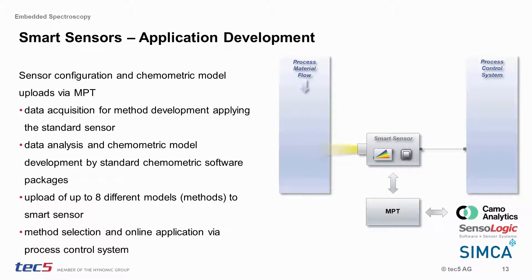In order to immediately convert measured spectra into process-relevant and manageable data, our smart sensor systems have to be trained and configured accordingly. The monitoring and parameterization tool, MPT, is the key element for sensor configuration and upload of up to eight chemometric models to the embedded electronics. For this so-called application development, spectra can be acquired for standard multivariate data analysis packages from known suppliers like ChemoAnalytics, Sensilogic, and Umetric Simca. Once the chemometric models are finished, they can subsequently be transferred to the smart sensors via service ports. Our smart sensor systems are also capable of receiving relevant data such as recipes through a PLC.